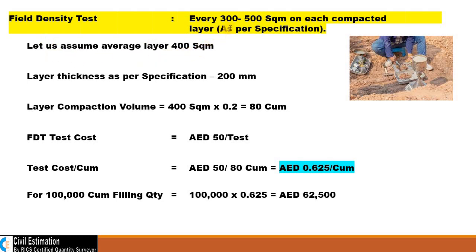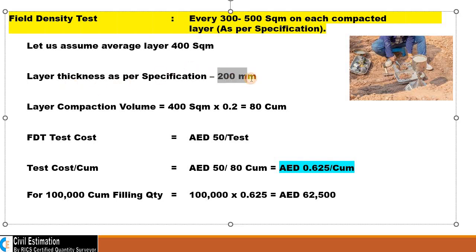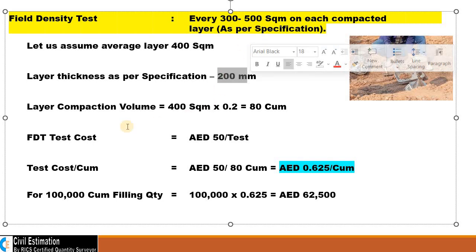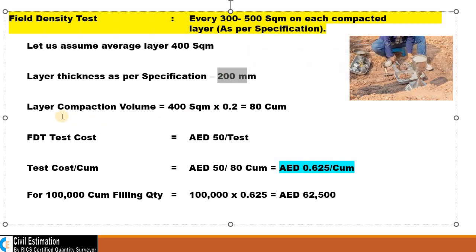Let us assume the average layer area is 400 square meters, and each layer thickness is 200 mm — this is also clearly mentioned in the client specification. So what will be the compaction volume per layer? 400 square meters area multiplied by 0.2 meters thickness gives a total quantity of 80 cubic meters.